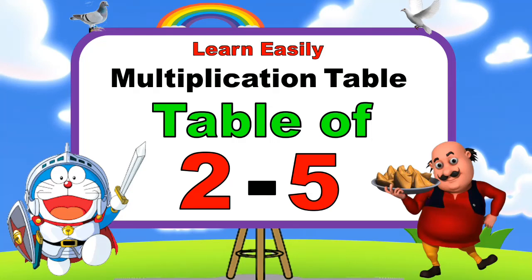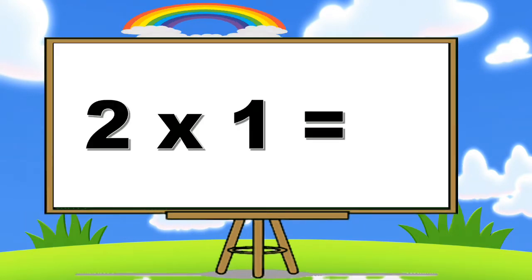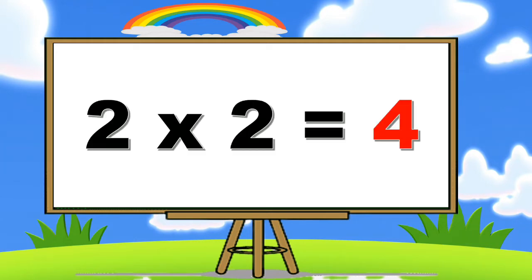Table of two to five. Table of two. Two ones are two. Two twos are four.